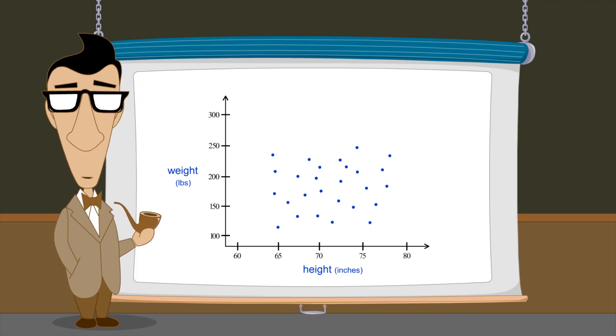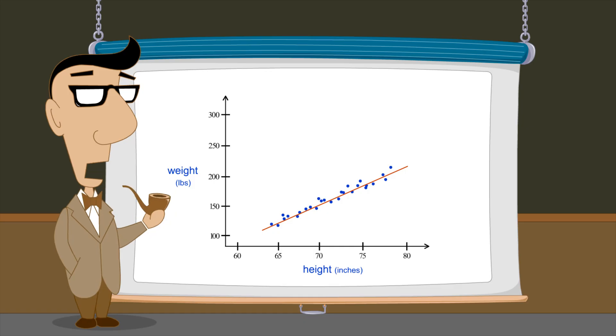When the data points are grouped closely to the trend line, we say that they are strongly correlated. If the data points are grouped more loosely around the trend line, we say that they are weakly correlated.